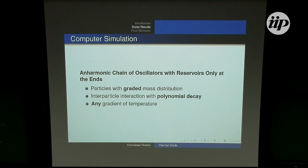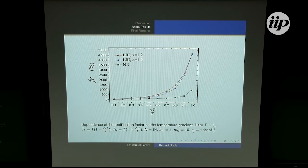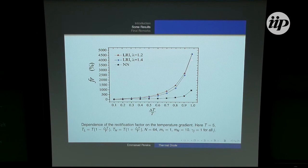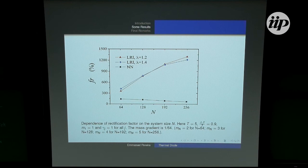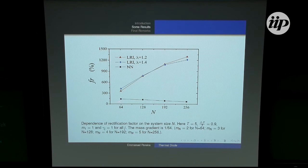For the simulations, we took oscillators with graded mass distributions, harmonic interparticle interactions with polynomial decay, and anharmonic on-site potentials, with any temperature gradient. As we increase the temperature gradient, the rectification factor increases for the system with nearest-neighbor interaction, but it increases much more for the system with long-range interaction. The rectification factor as a function of system size decays for nearest-neighbor systems — even with a graded structure — while with long-range interactions, it is increasing.